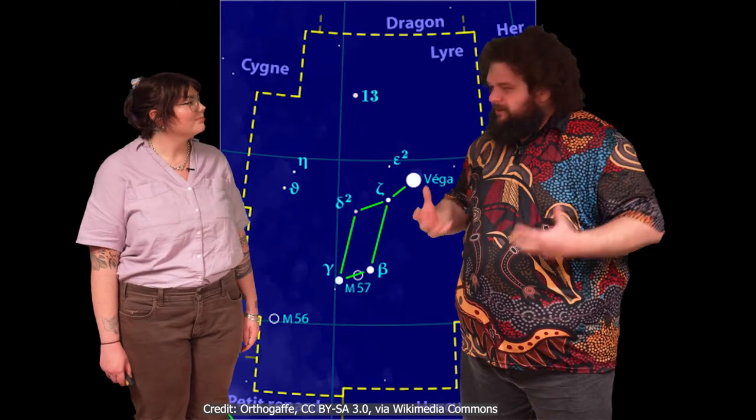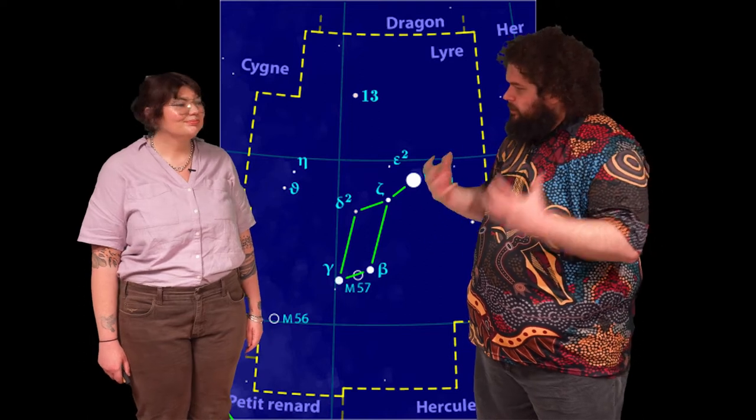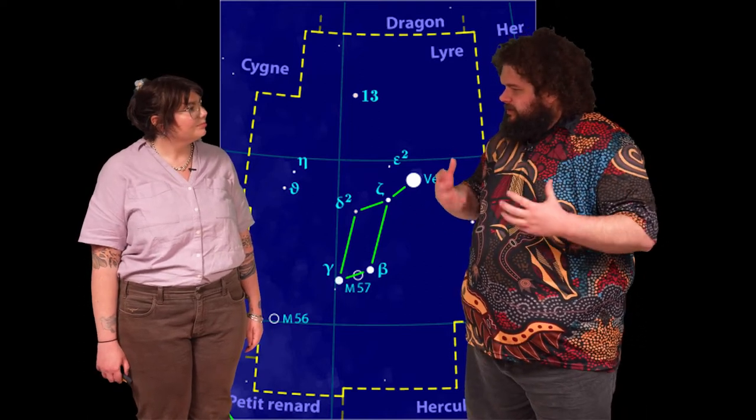So in addition to songlines, there's another method that Aboriginal and Torres Strait Islander people use to navigate long distances, and that's through this idea of star maps.